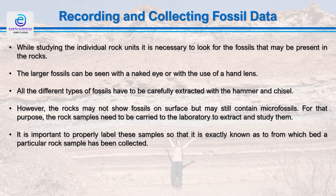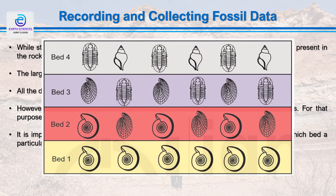While studying individual rock units, it is necessary to look for fossils if they are present. Larger fossils can be seen with the naked eye or with a hand lens. Other fossil types must be carefully extracted with a hammer and chisel. However, if the rock does not show fossils on the surface, it may still contain microfossils. For that purpose, rock samples need to be carried to the laboratory for extraction. It is important to properly label these samples so that the exact location and exact bedding plane from which they were collected is known.